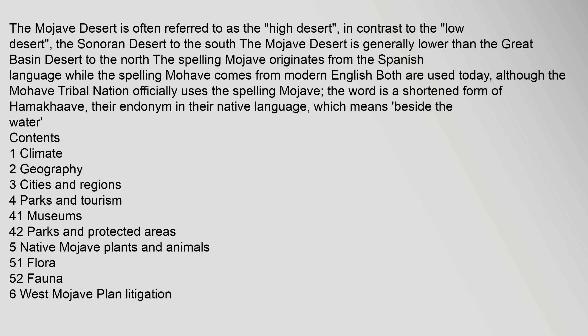The Mojave Desert is often referred to as the high desert, in contrast to the low desert, the Sonoran Desert to the south. The Mojave Desert is generally lower than the Great Basin Desert to the north. The spelling Mojave originates from the Spanish language while the spelling Mojave comes from modern English — both are used today. Although the Mojave tribal nation officially uses the spelling Mojave, the word is a shortened form of Hamahab, their endonym in their native language.